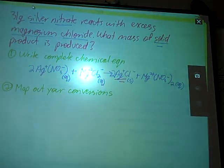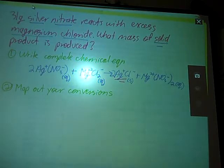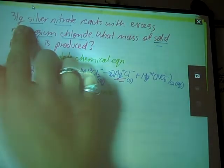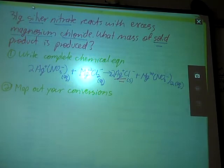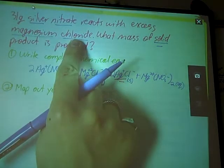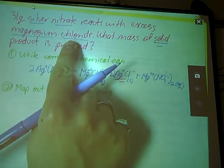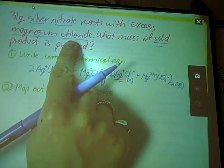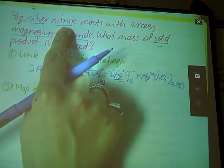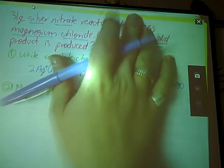So what steps are you going to need to take to get from your mass of reactant to your mass of solid? In this problem, they only gave me one mass that I have to worry about. I have way too much magnesium chloride, so there's no way that this is going to limit how much product I can make.